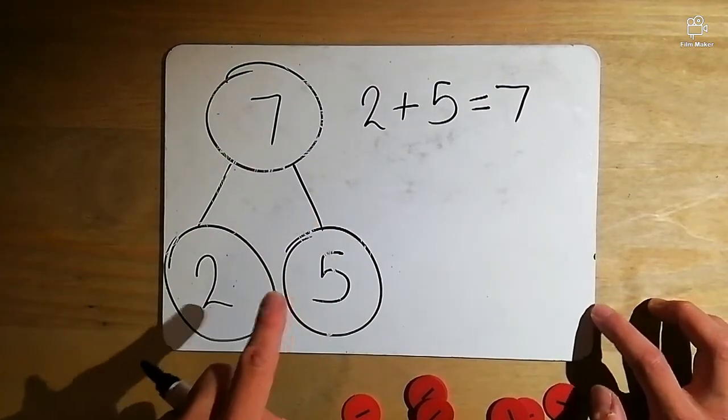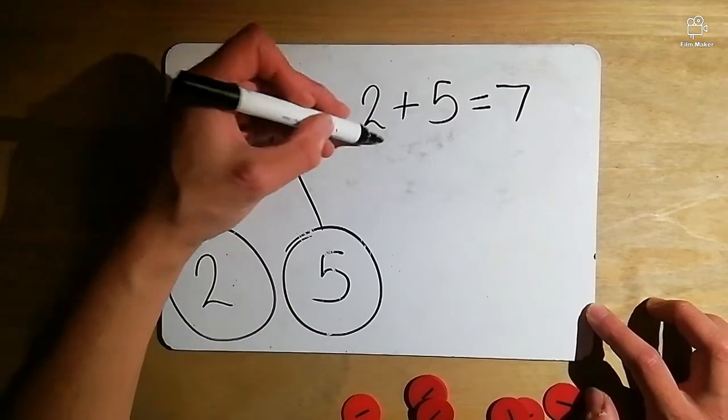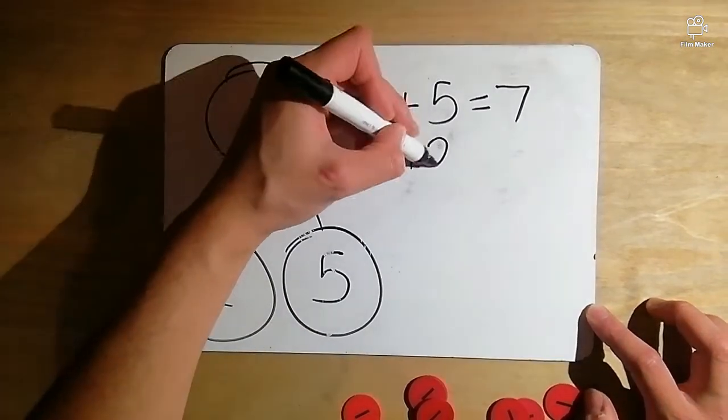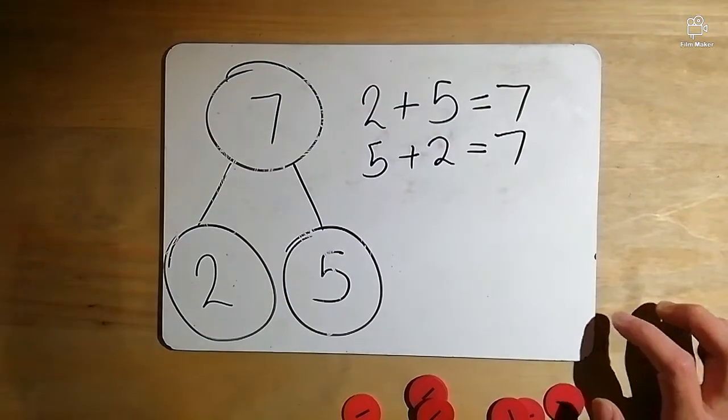Let's see if we swap them round because we know we can in addition. We can see that five add two equals seven.